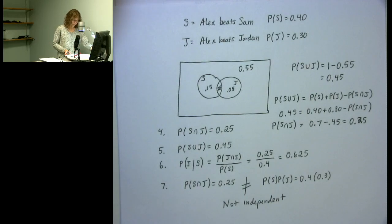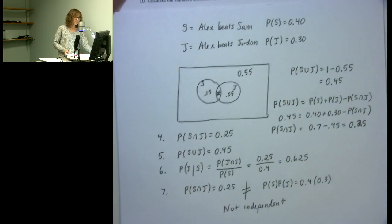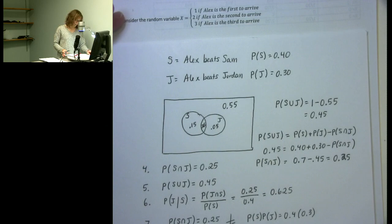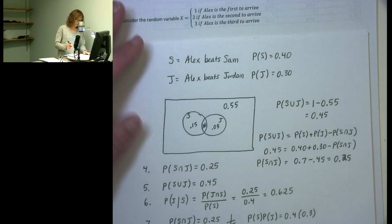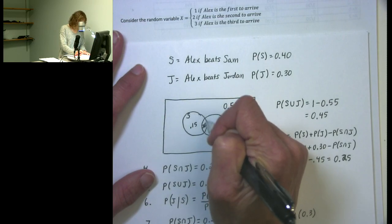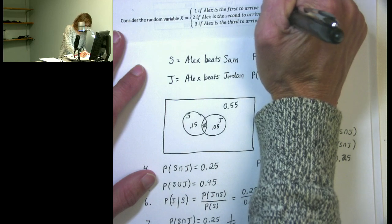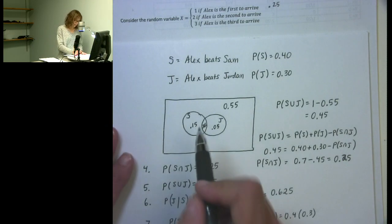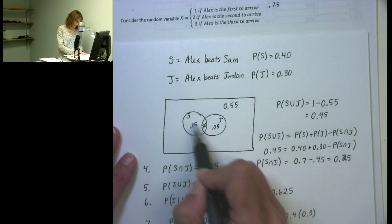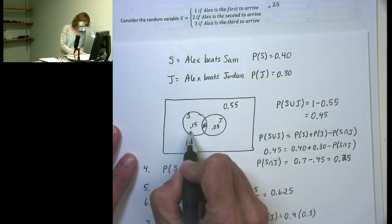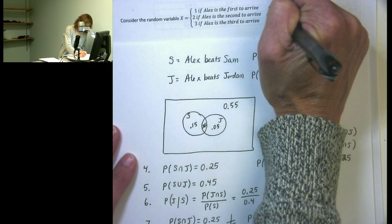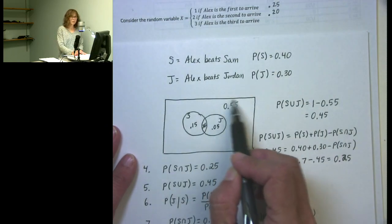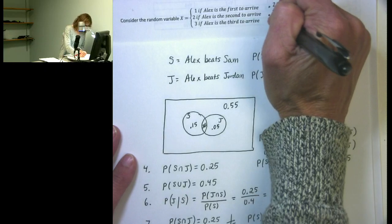Moving to the later part of this scenario, we consider the random variable X, where X equals 1 if Alex is the first to arrive — meaning he beats both Sam and Jordan, with probability 0.25. X equals 2 if Alex is second, meaning he beats either Sam but not Jordan, or Jordan but not Sam; adding 0.15 and 0.05 gives probability 0.20. X equals 3 if Alex is third, meaning he beats neither, which is the given probability of 0.55.